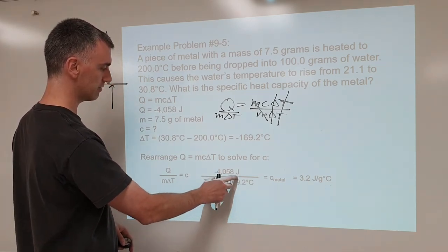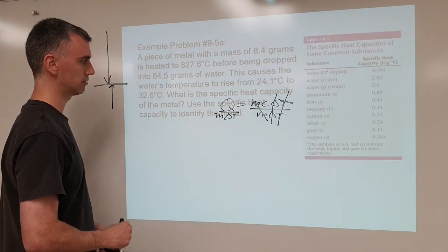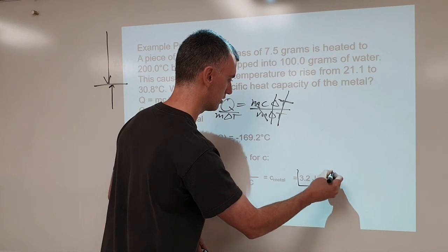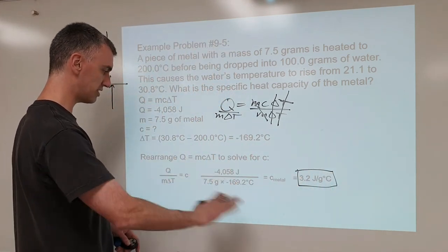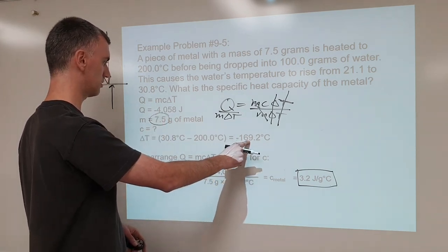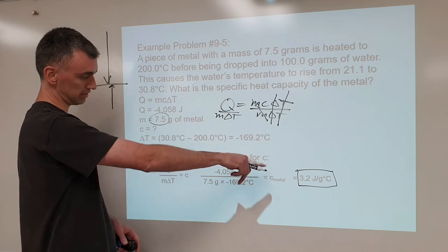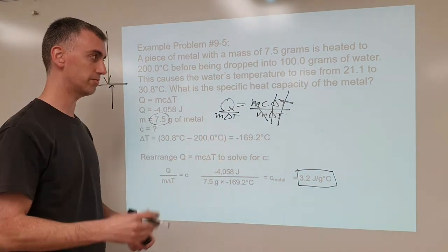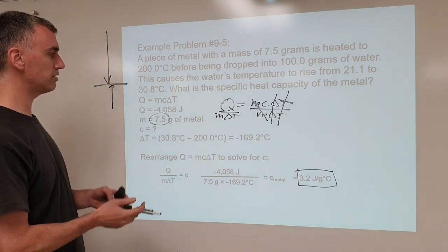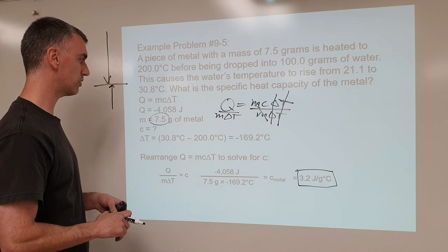This divided by those gives our answer. Round to two significant figures because of the given mass value. The units are joules per gram degree Celsius, which are the units of specific heat capacity — that's the specific heat capacity of the metal. Don't round anything prior to the final step; it's only at the end that you finish by doing your rounding. That would be our specific heat capacity of the metal, and if you have a list of specific heat capacities, you can match it to identify which metal it is.